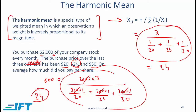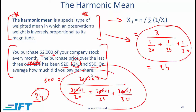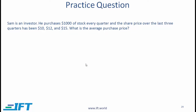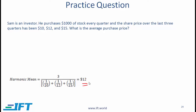The key use of the harmonic mean is this: when you are spending an equal amount of money on stocks where the stock price is changing and you want to compute the average price you are paying, you must compute the harmonic mean. Here is a practice question to reinforce this concept — you should be able to do it quickly, and the answer is on average you pay $12 per stock.